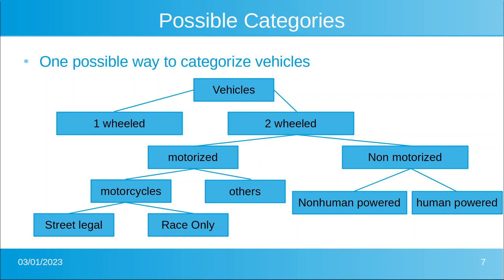Here is one possible way to categorize those vehicles — not the only way. You could find a problem right away: what if you have a trailer with more than two tires? Maybe the number of wheels isn't the best separator. But for our purposes, let's look at this tree. A moped would go under vehicles → two-wheeled → motorized → others. A bicycle would be vehicles → two-wheeled → non-motorized → human-powered.